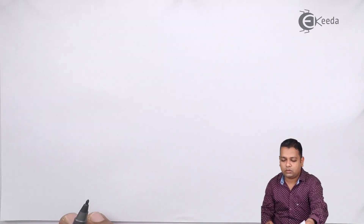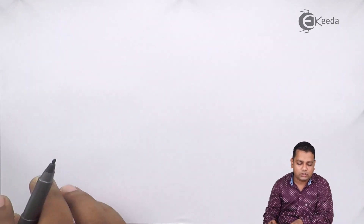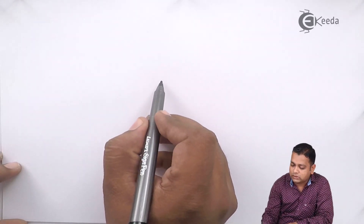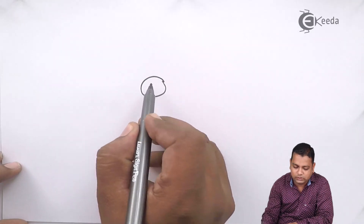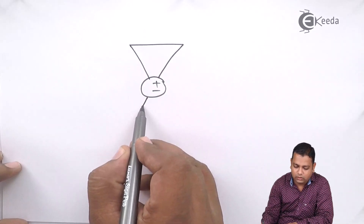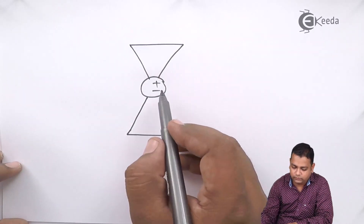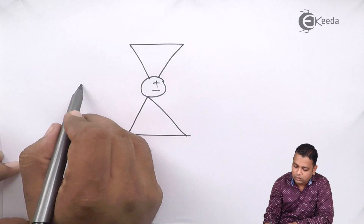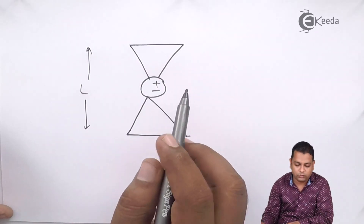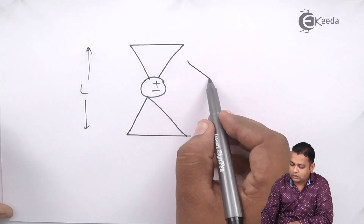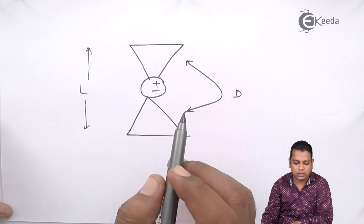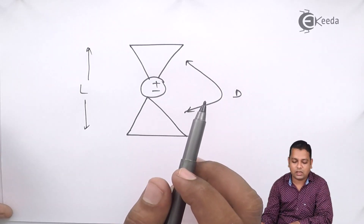The second type in the log periodic category is the bow tie antenna. For the bow tie type of antenna, the diagram can be drawn with a shape resembling a bow tie. The length of the antenna can be denoted, and the directivity D can be noted for these two elements which act as dipoles.